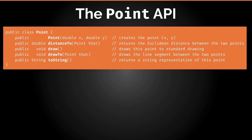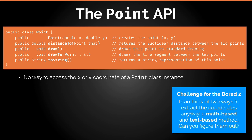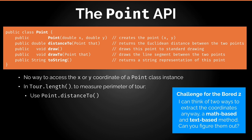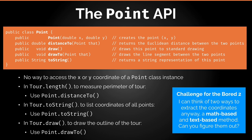Now some tips and tricks. There's no way to access the x and y coordinates of a point directly from the Point class, and that's intentional. Can you think of a math-based or text-based way of extracting coordinates? In tour.length, to measure the perimeter of the tour, you use point.distanceTo. In tour.toString, to list the coordinates of all points, you use point.toString. In tour.draw, to draw the outline of the tour, you use point.drawTo. These are the three ways you get around the fact that once a Point has been created, you cannot recover its x and y coordinates directly.